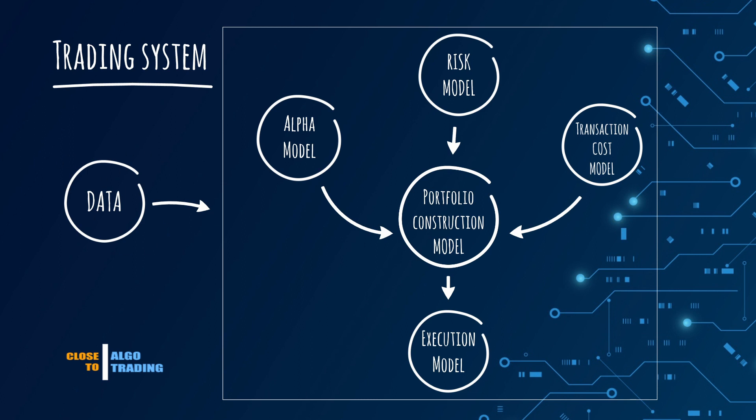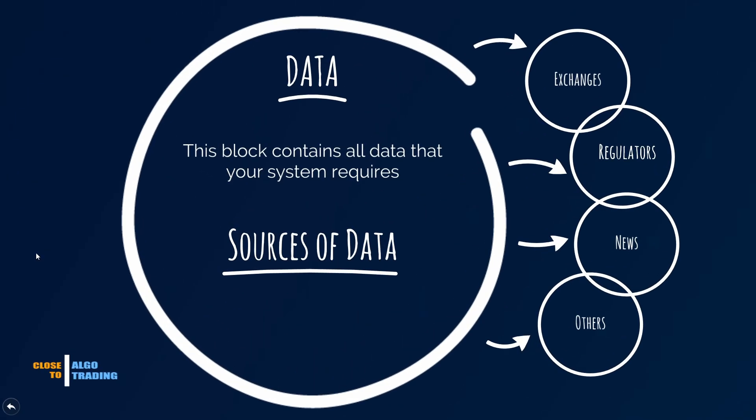Let's have a closer look at this structure and start from the data block. As you may see, the data block is not a part of the trading system. But the data are like oxygen which all components of the system use. The data block contains all kinds of data that the trading system requires. The data can come from many different data sources. Here you can see some of them.